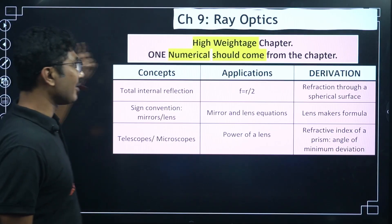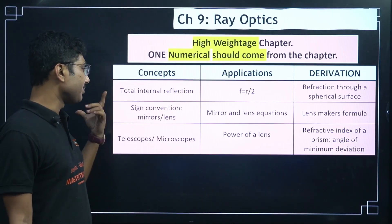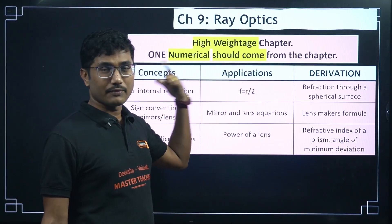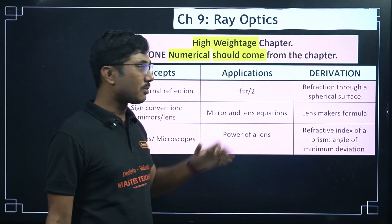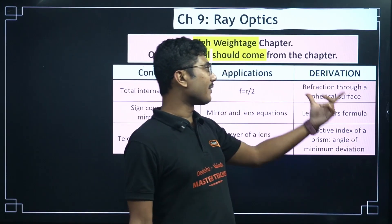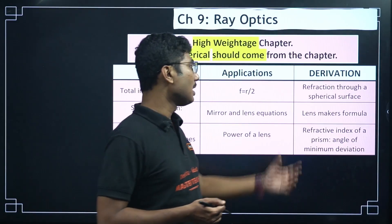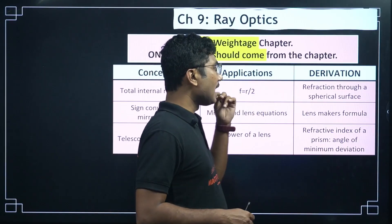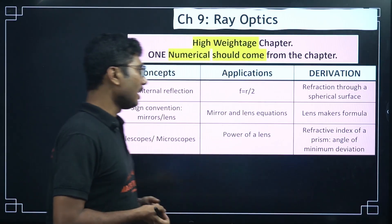Ray Optics is a high-weighted chapter. You must practice total internal reflection, sign convention, mirror and lens equations, telescopes, and microscopes. Application topics: focal length equals R by 2 derivation, mirror and lens equations, power of a lens — based on these you will get numerical questions as well. Key derivations: refraction through a spherical surface (both the formula and derivation are important), lensmaker's formula (derivation and formula both important), and refractive index of a prism with angle of minimum deviation — all very important from this chapter.